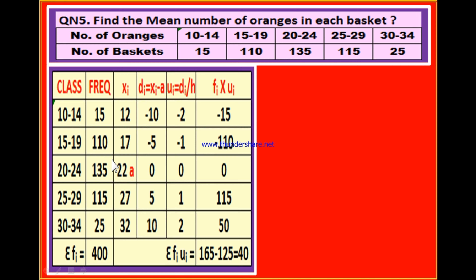For the 20–24 class, mid-value is 22 and a is 22, so 22 minus 22 is 0. For 25–29, mid-value is 27 and a is 22, so 27 minus 22 is 5. For 30–34, mid-value is 32 and a is 22, so 32 minus 22 is 10. For 15–19, mid-value is 17 and a is 22, so 17 minus 22 is minus 5. For 10–14, mid-value is 12 and a is 22, so 12 minus 22 is minus 10. These are the deviation column values.